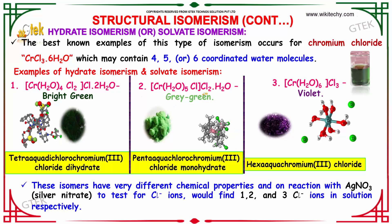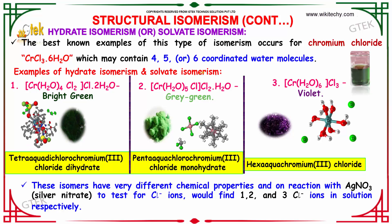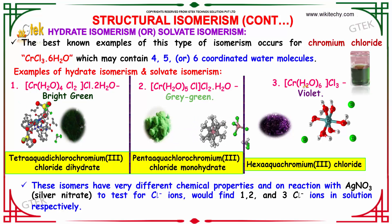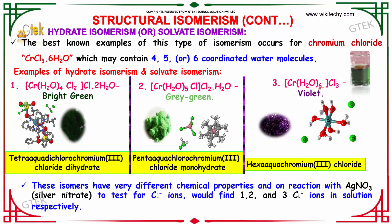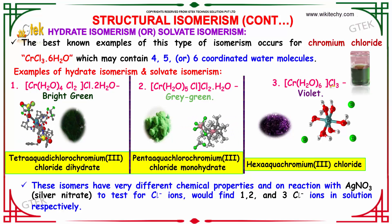Over here, 1 water moves in, giving 5 water inside and 1 outside — it is grey-green. This is pentaaquachlorochromium chloride monohydrate. Now, taking all the water inside gives 6 water, making hexaaquachromium chloride.